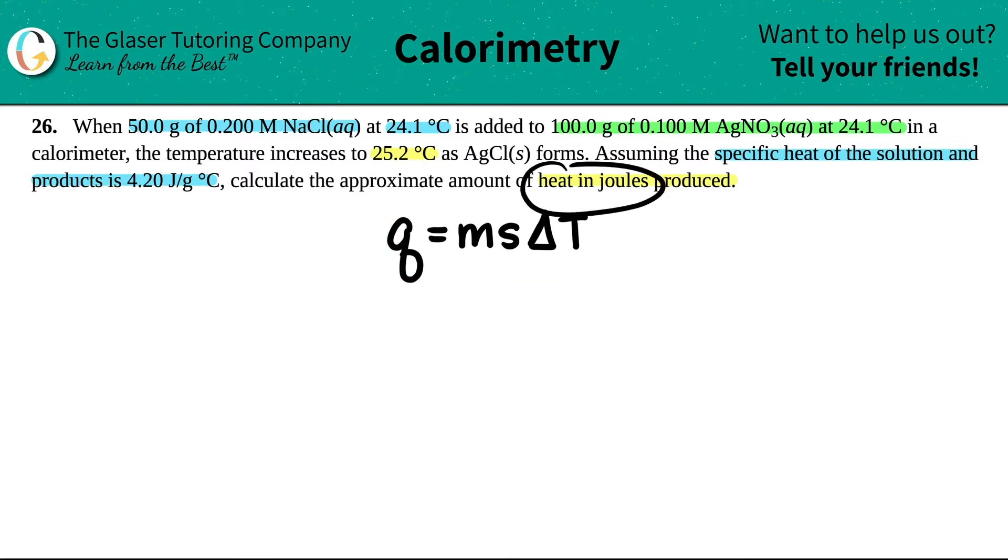Now in this case, they wanted to know how much the heat is in joules produced. So I'm looking for the Q, which means that I should technically know all the other three components. So let's start with the mass. Now when you're doing solution heat, either production or removal, the mass is going to be the total mass of your solution. In this case, we're adding 50 grams of this compound and a hundred grams of this compound together. So the mass would just be 50.0 grams plus the 100 grams. The 50 came from the NaCl and the 100 came from the AgNO3. And the total solution now would be 150.